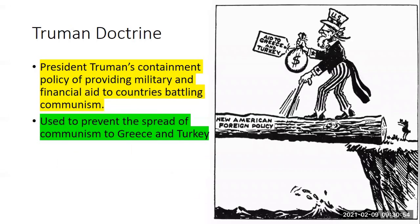We're going to practice containment. The first place is Greece and Turkey. This is going to be President Truman using the containment policy to provide military and financial aid to countries fighting communist insurgents. It's called the Truman Doctrine. We're going to provide military and financial aid to countries all over the world to help them fight off the threat of communism. Greece and Turkey after World War II need help suppressing communist groups. The Soviet Union was doing the exact same thing — financing communist groups in other countries hoping to overthrow their governments.